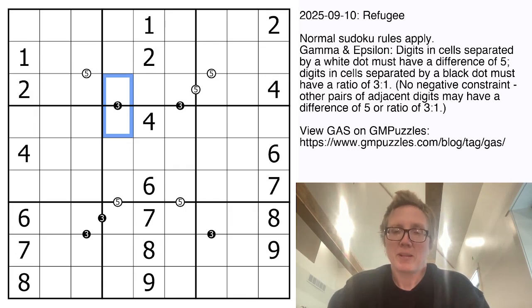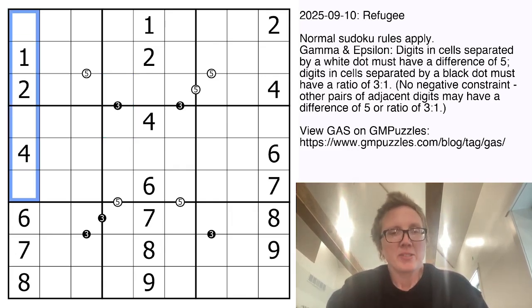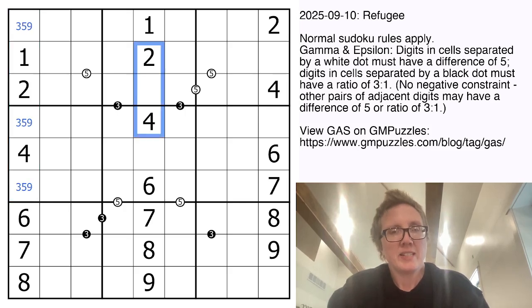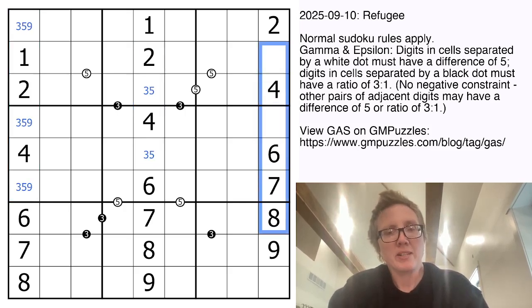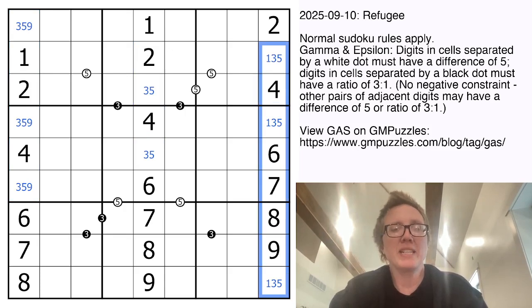Not all possible pairs have necessarily been marked with clues, so just because you don't see a black or white dot doesn't mean the two digits don't have one of those two relationships. So let's start by penciling in our remaining digits in our columns here. We can't fill any of those out just yet, so let's work on some of our dots.